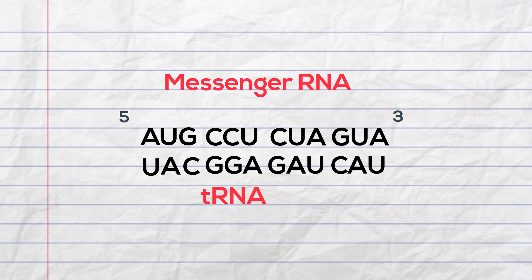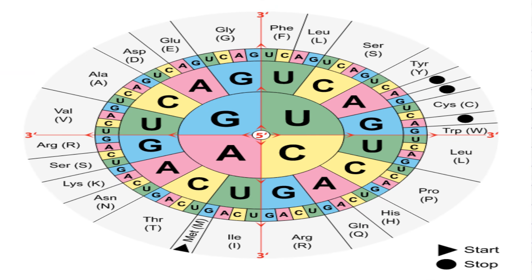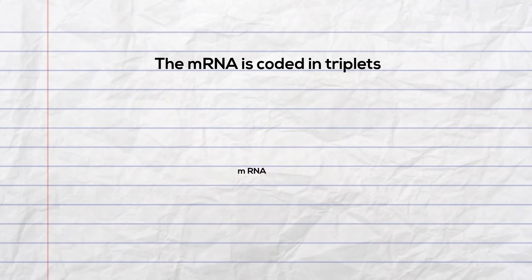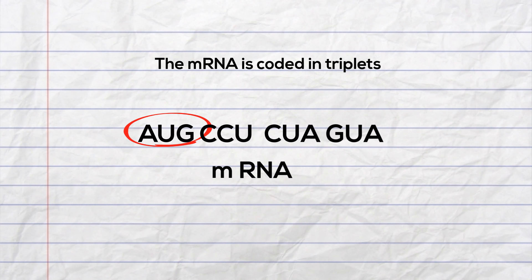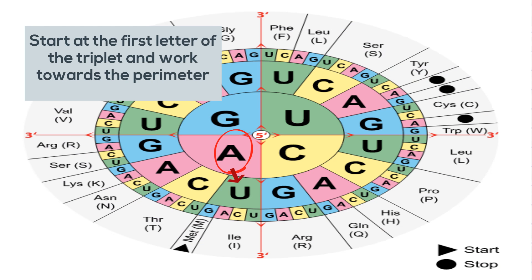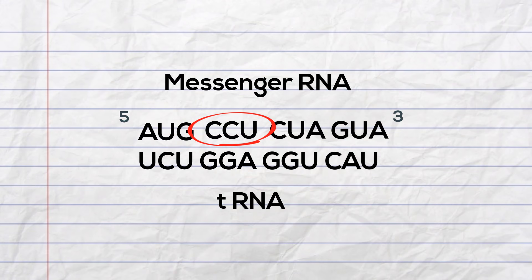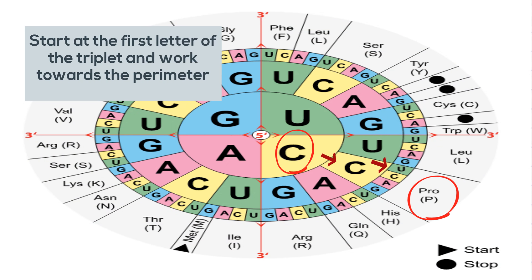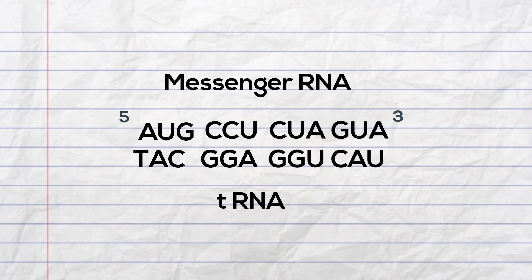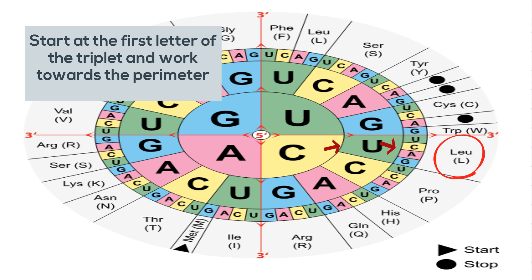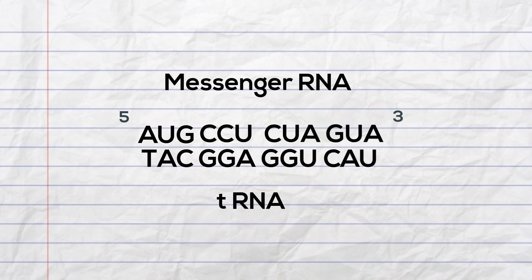Now let's find the amino acid. You can use an amino acid chart. I am using an mRNA chart so I will use the messenger RNA codon. The mRNA will code in triplets. AUG pairs up with methionine. Next I have CCU and it pairs up with proline. CUA pairs up with leucine and GUA pairs up with valine.